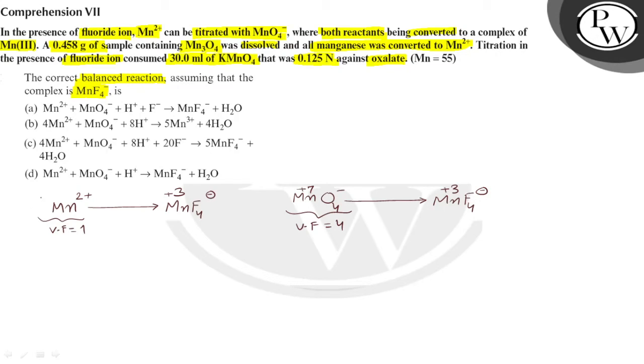To equate, you have to multiply here by 4 and here by 1. So what should be the net reaction: 4 Mn2+ plus permanganate ion.